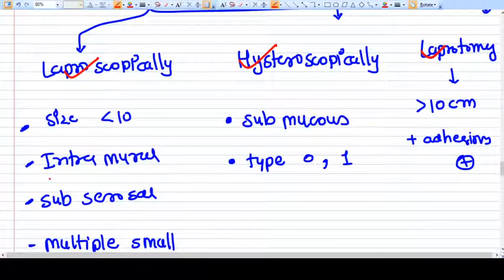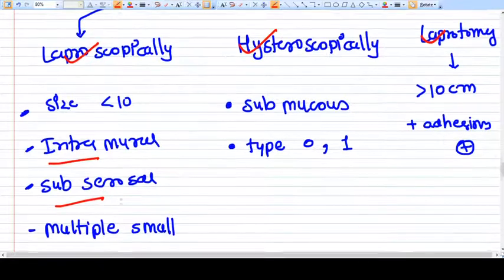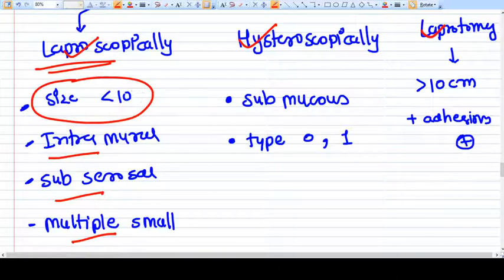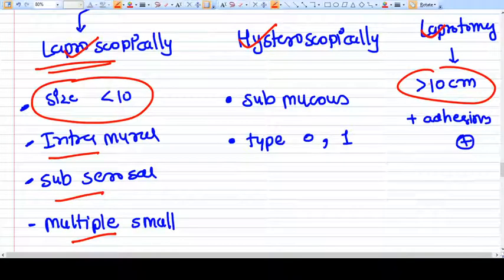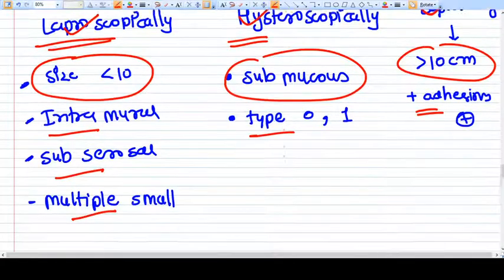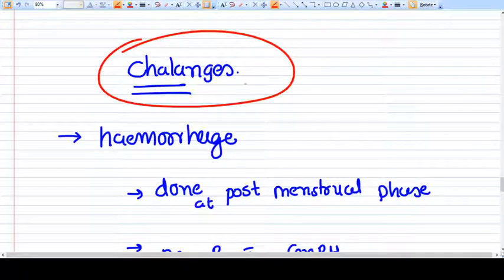When the myoma is intramural or subserosal or there are multiple small myomas, then you prefer laparoscopy as a method. But again the size should be less than 10 centimeter. Laparotomy is done when there is more than 10 centimeter of size of fibroid and there you expect very adhesion in the abdominal cavity, then you can go for laparotomy. But most of the myomectomy these days are done laparoscopically. If the myoma is submucous type 0 and type 1, then you can go with the hysteroscopical removal of the myoma.